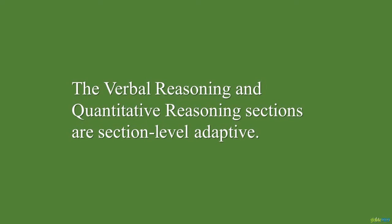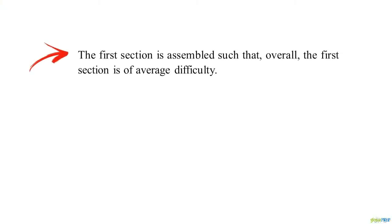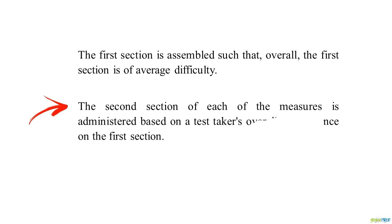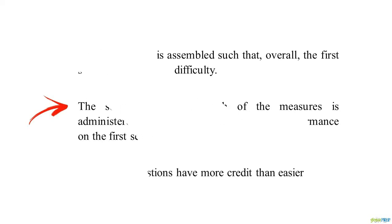For example, if you perform very well on the first verbal section, you will receive the most difficult second section in verbal, but you'll also have access to the highest potential score range. If you perform less well on the first section of the verbal, you'll see a less difficult second verbal section, but you'll also have access to a lower score band or potential.